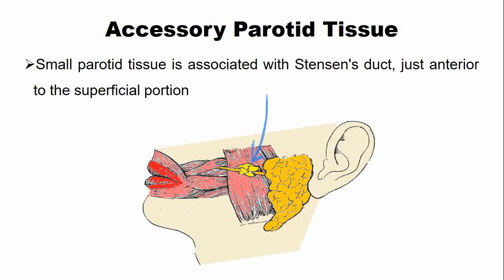Accessory parotid tissue is sometimes associated with Stenson's duct. Sometimes the parotid tissue is associated with Stenson's duct just anterior to the superficial portion. Here in this picture you can see the accessory parotid tissue that is closely associated with the Stenson's duct.